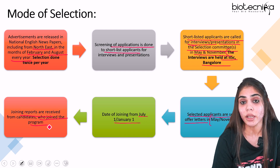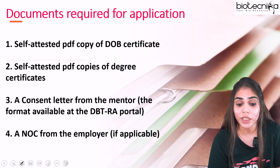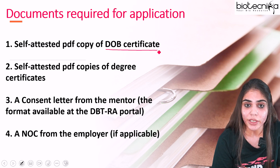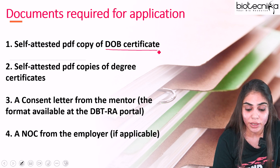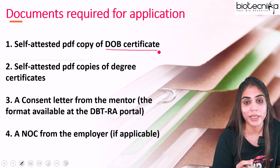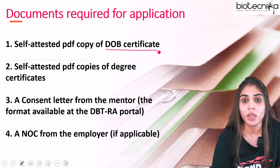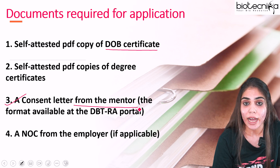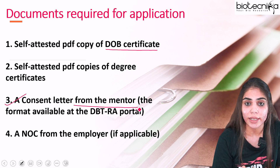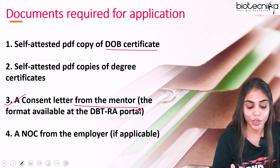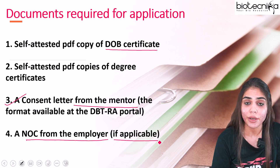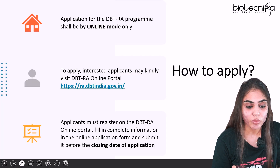What documents are required during the application? You need a self-attested PDF copy of your date of birth certificate, PDF copies of all degree certificates starting from BSc and MSc, all semester mark sheets, and your PhD degree certificate. A consent letter from your mentor is also required — the format is available on the DBT-RA portal for download. If you are currently employed, an NOC from your employer is also required.